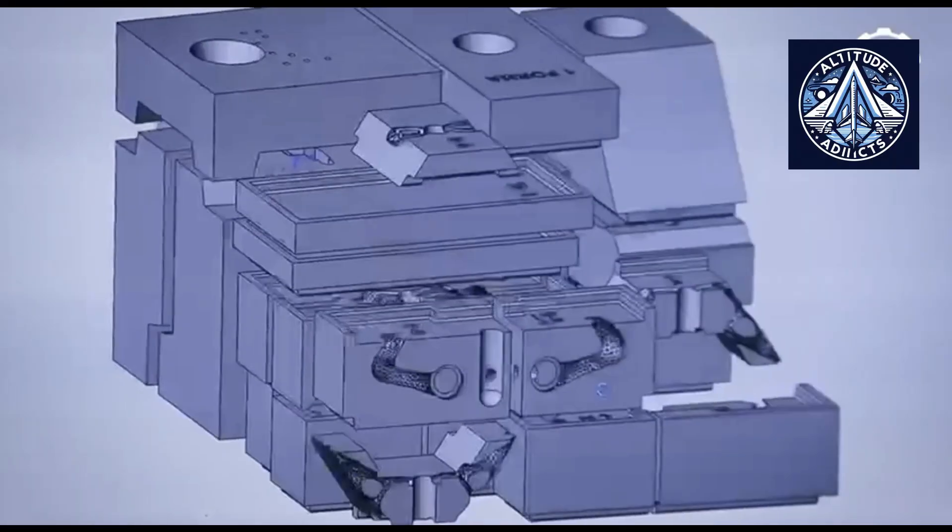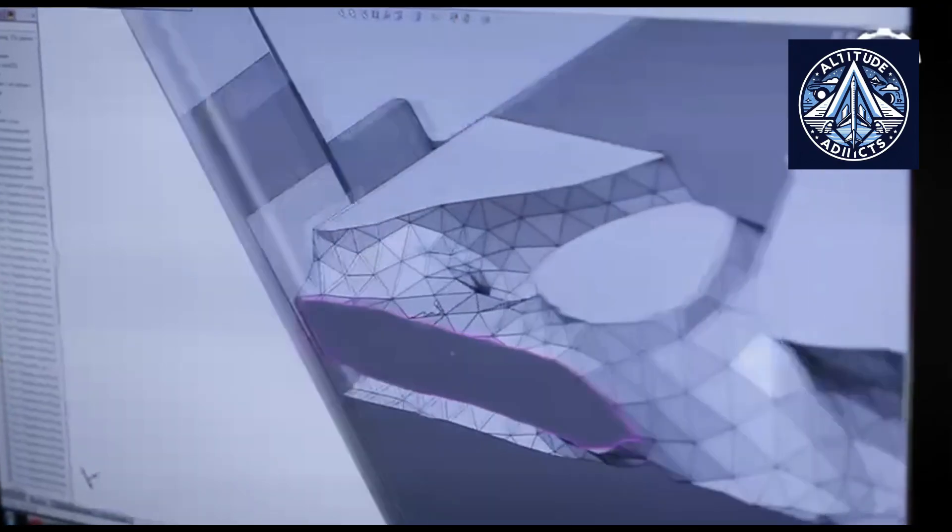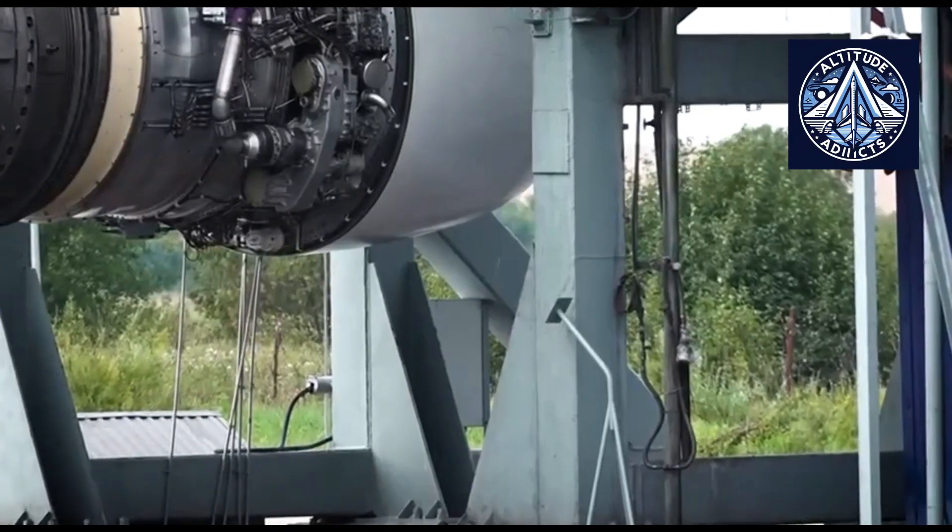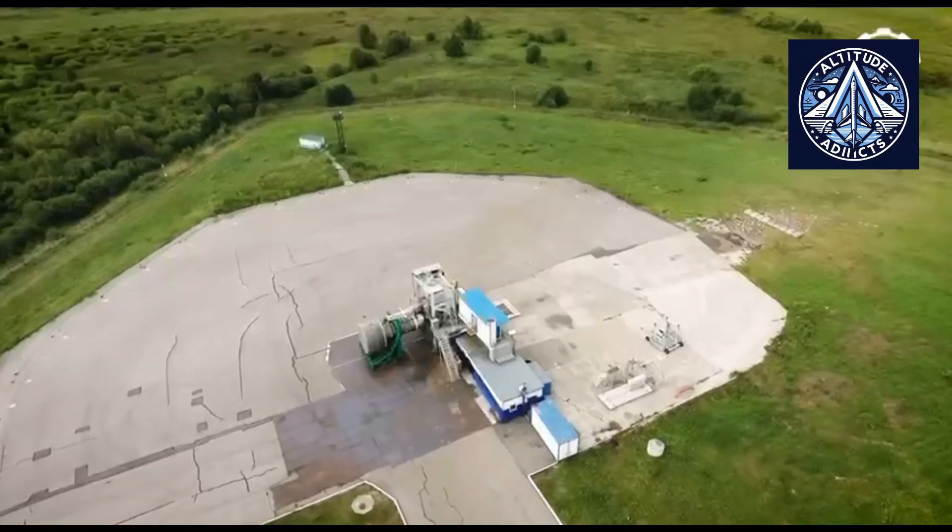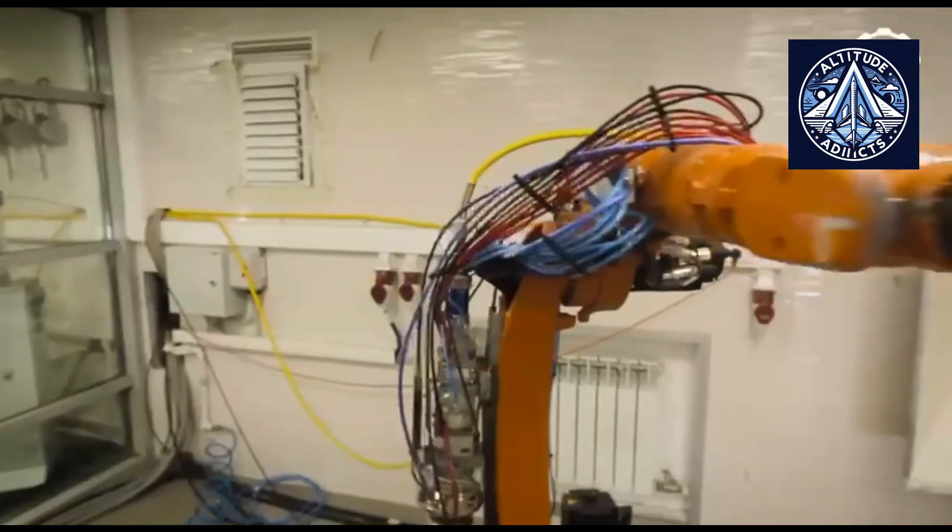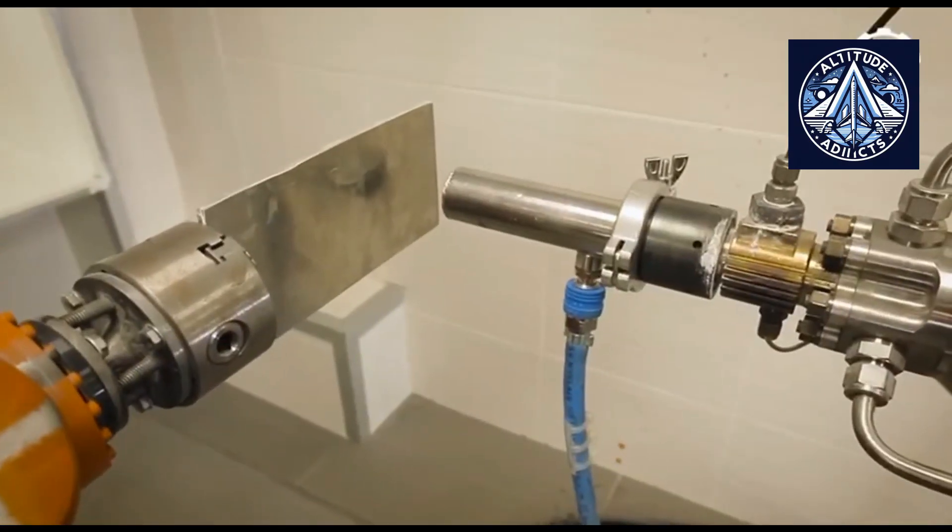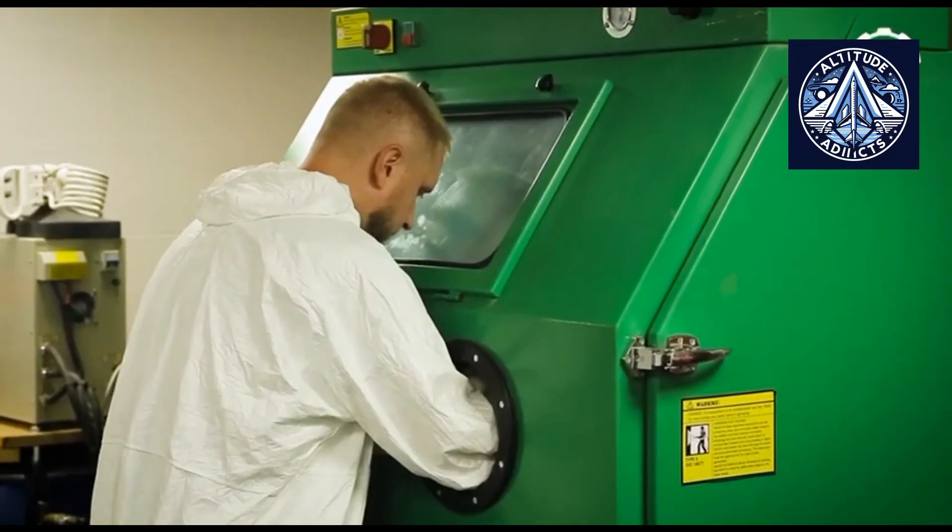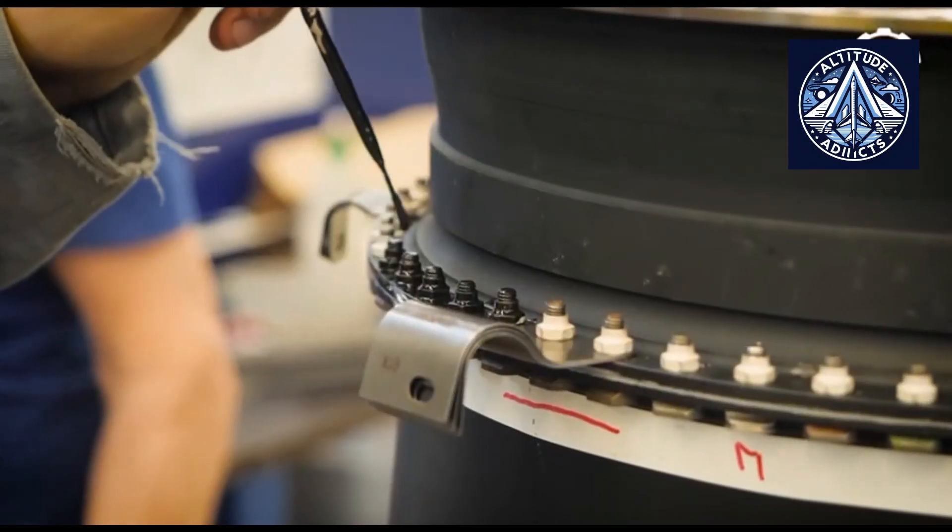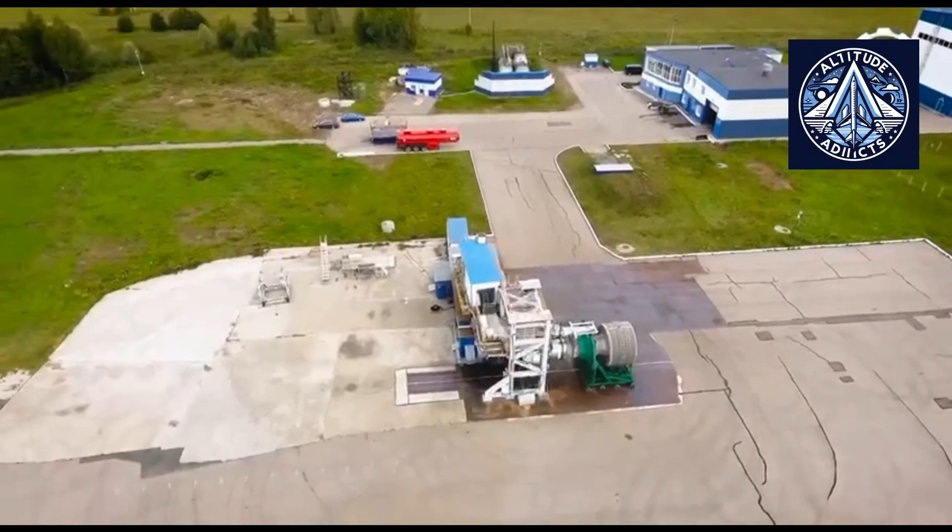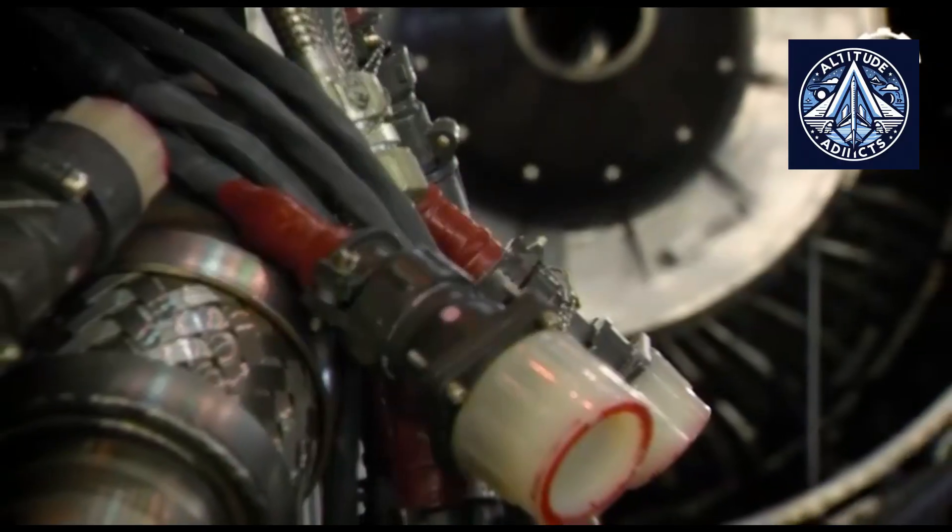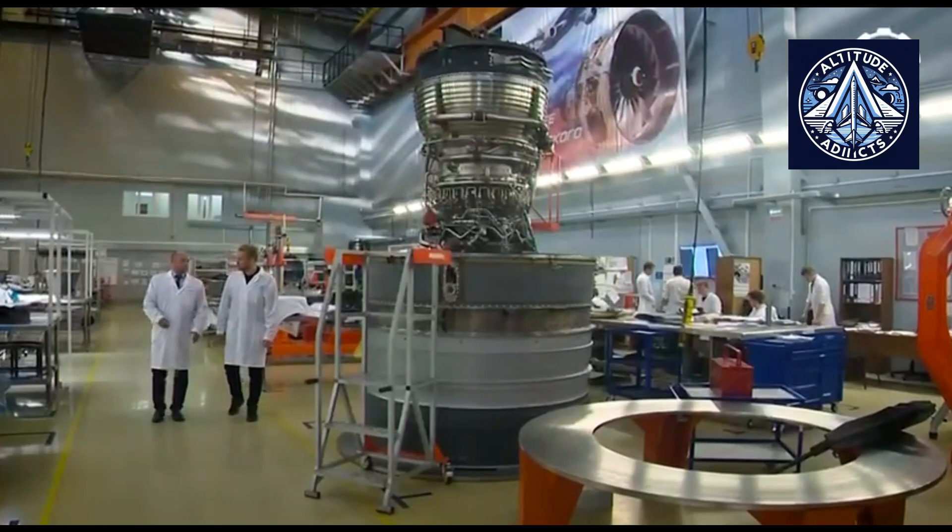A major materials science project accompanied the program, producing a complete database of mechanical properties for all key structural materials. On 15th October 2018, the PD-14 received its type certificate from Russian aviation authorities. The PD-8 is a smaller but equally advanced engine built on the same technological principles. Both engines demonstrate Russia's entry into the global fifth-generation civil turbofan market, where efficiency, environmental responsibility, and digital control are essential.